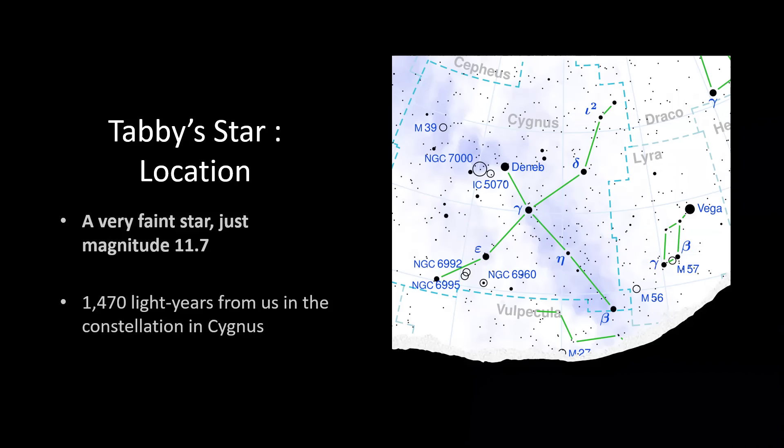It's too faint really to go tracking down. Magnitude 11.7 is right on the limit for many amateur telescopes, and all you'll see is the faintest of dots. We believe it's 1470 light years away from us. That's quite a significant distance and accounts partly for why it's so faint.